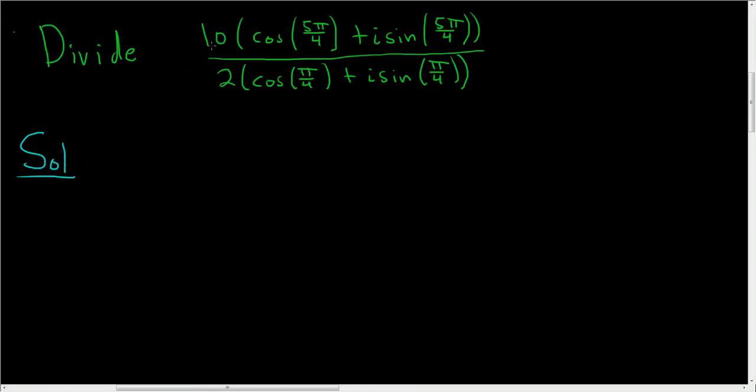First you divide the 10 and the 2 so you get 5. And then parentheses and all you do when you're dividing is you subtract the angles. So 5π over 4 minus π over 4. Let's do that over here.